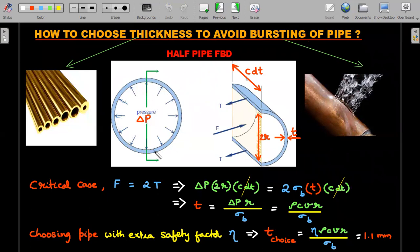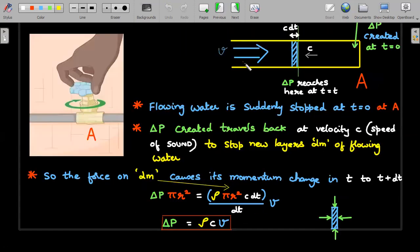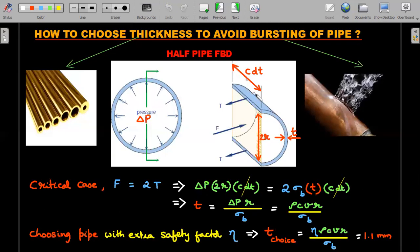So I'm cutting this half-pipe and drawing the FBD of that half. The left half has been taken out. The left half force of tension is shown in this diagram. The liquid inside will be pushing it, whereas the other half will be pulling it. What is the length of the pipe that I've taken? Again, the length is same as the length of the dm element in the previous slide. So this cdt length has been enlarged so that you can visualize.